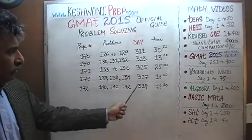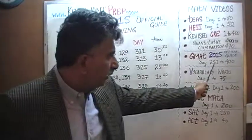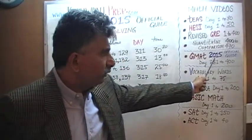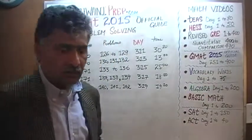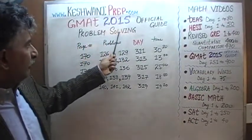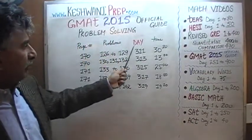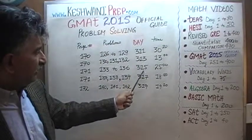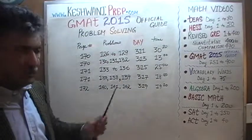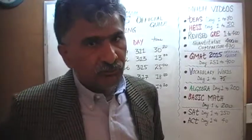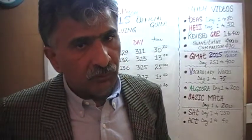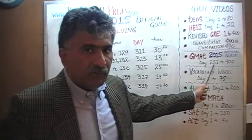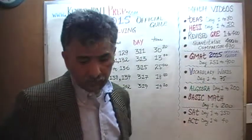You will find the solutions to all the problems from day number 251 through 400 of the GMAT 2015 Official Guide. The problem solving questions are presented on odd-numbered days: 311, 313, 315, 317, 319. You will find the solutions to all the data sufficiency questions on even-numbered days, beginning with 252 all the way up to 400.